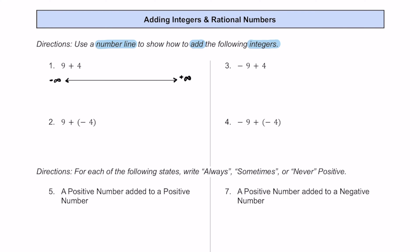We're going to start off with a 9 and we're going to be adding 4 to it. So we put maybe an 8 over here, we put a 9 to the right of it, then we're going to be adding 4 — that's a positive number — so we're going to be going to the right: 10, 11, 12, 13, 14. Putting a few numbers in here: 10, 11, 12, 13, and 14.